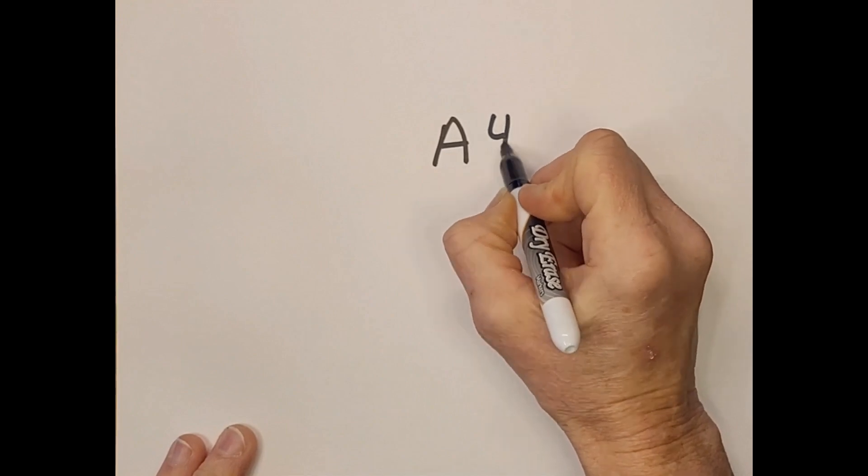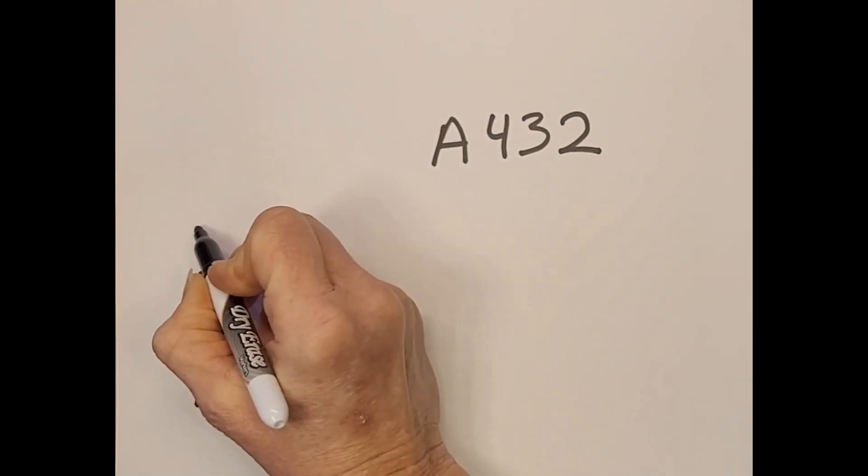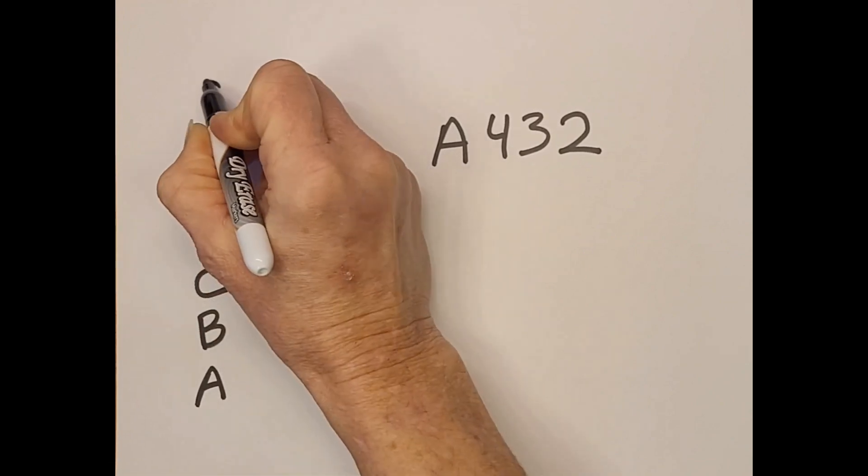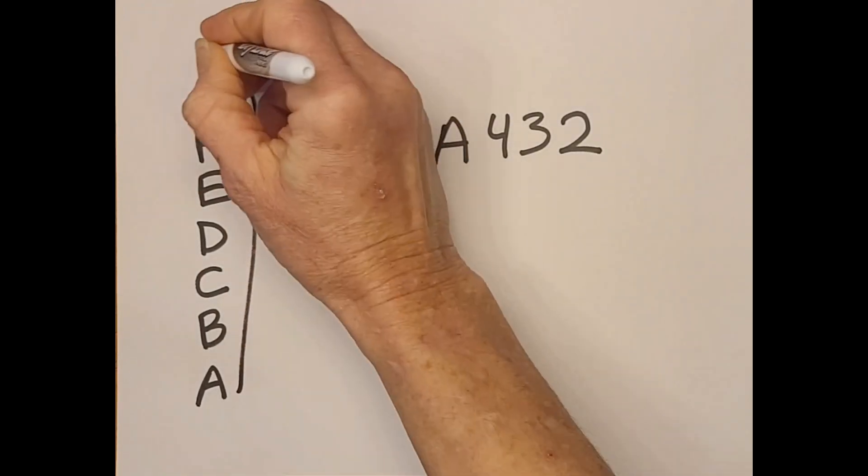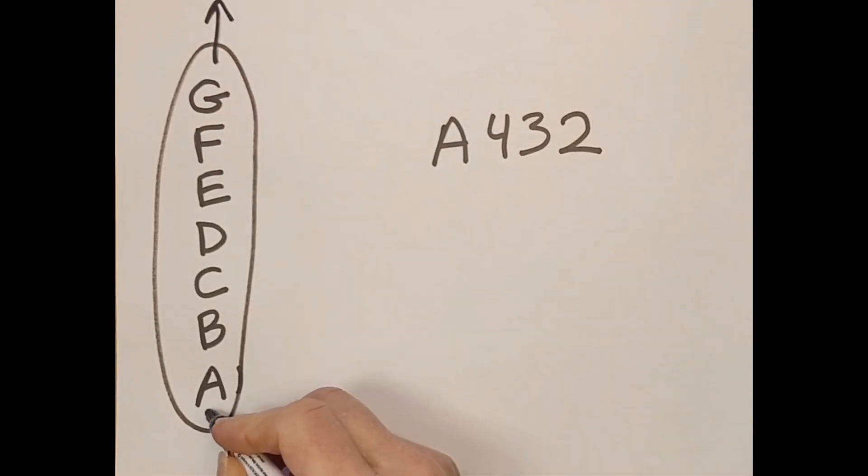When we use the letter A before a frequency number, it means we are tuning all our other notes from the starting point of A at that frequency. If the number for A goes up, all the other notes go up. If the number for A goes down, all the other notes go down.